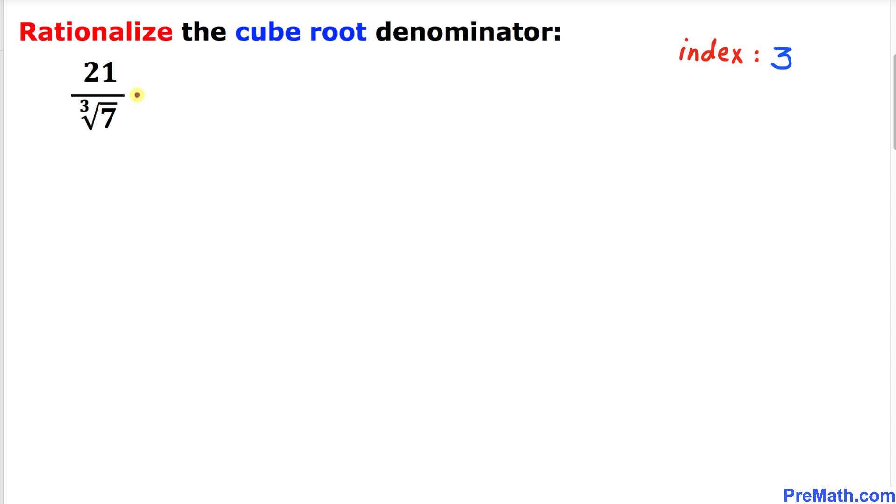Now let's revert back our attention to the original problem. This time our index is 3, so we are going to put this denominator part 3 times. Therefore we are going to write this down two more times to make it three times.